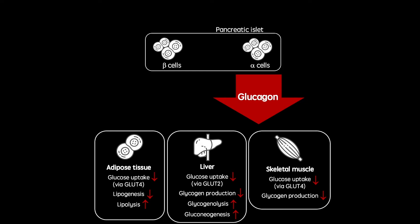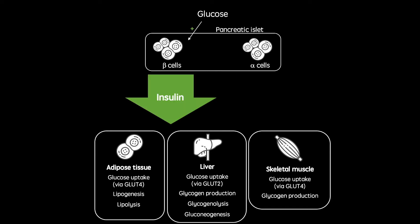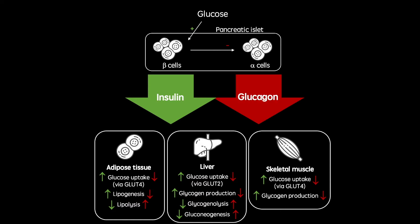However, when glucose is being absorbed by the gastrointestinal tract — usually shortly after a meal — beta cells are stimulated to secrete insulin. As well as inhibiting the secretion of glucagon, and therefore inhibiting all of its effects, insulin acts in a large variety of tissues, all working to reduce blood glucose concentration. These effects include increasing glucose uptake into tissues, as well as increasing the production of storage molecules. As you can see, these two hormones have opposing effects and together produce blood glucose homeostasis.